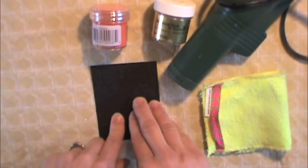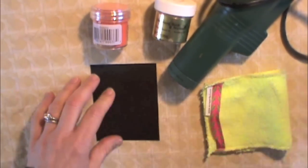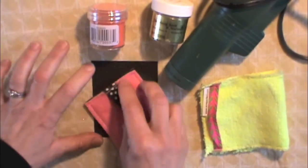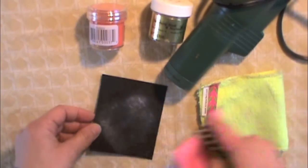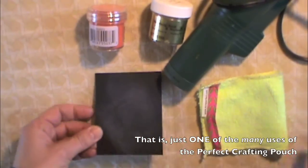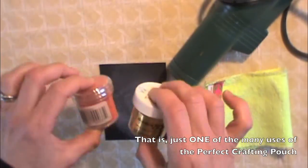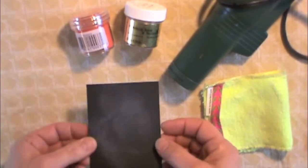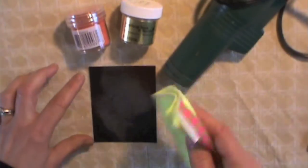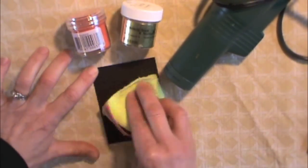So the Perfect Crafting Pouch works like an anti-static bag. You would put it down, you would stamp, you'd put your embossing powder down, you'd heat set it, and then you'd see that. So just take your cloth and it just lifts up the powder and removes it.